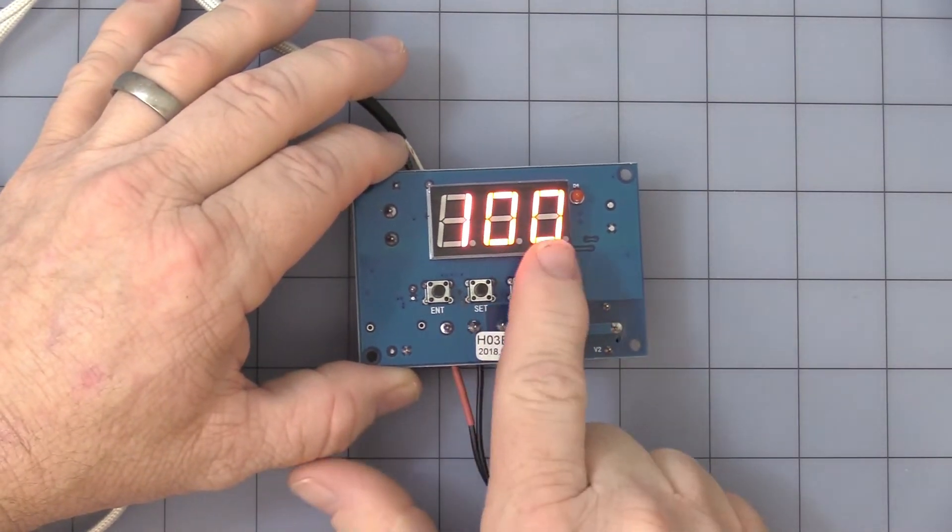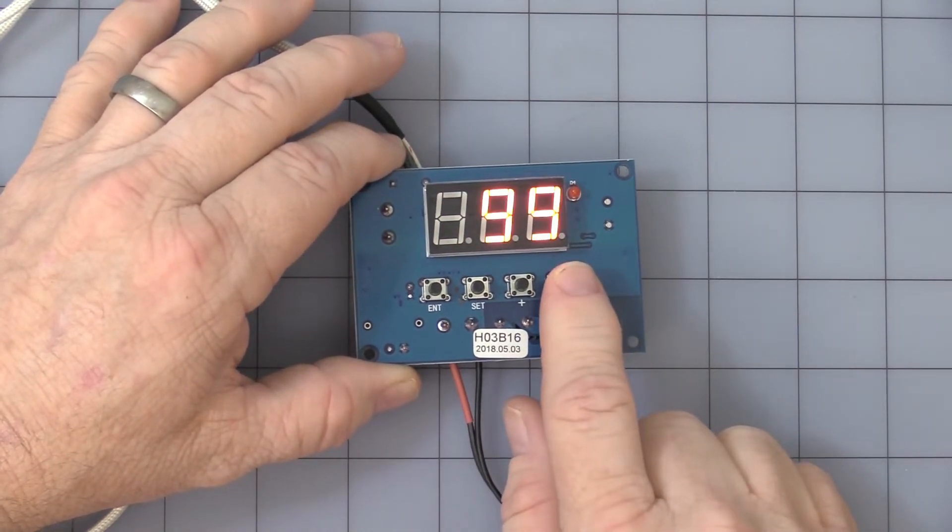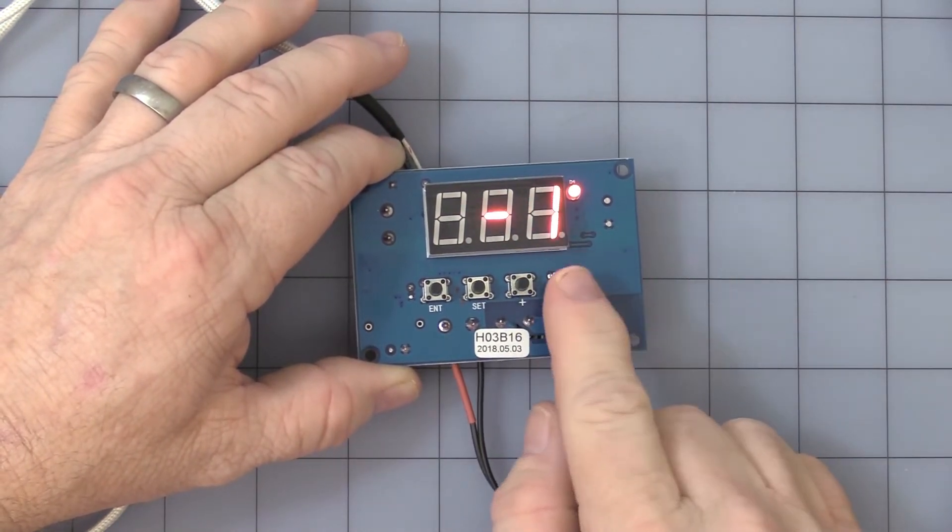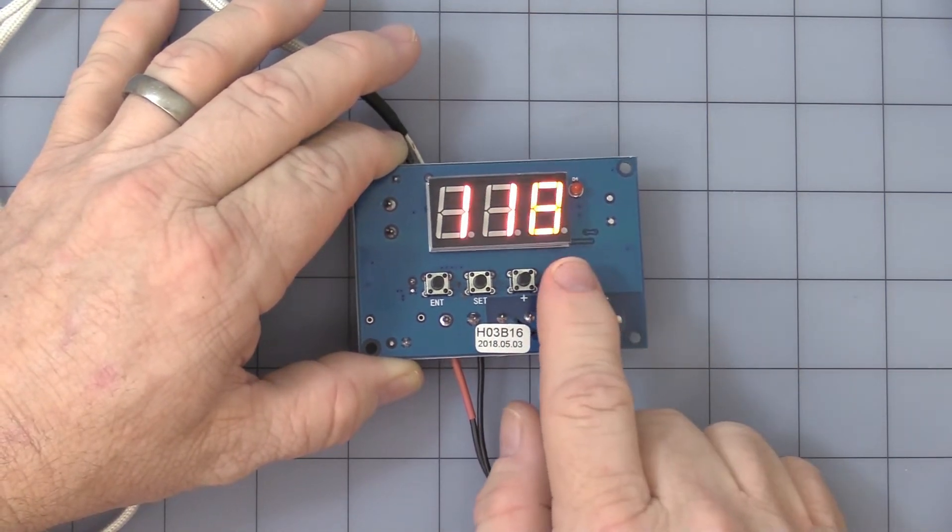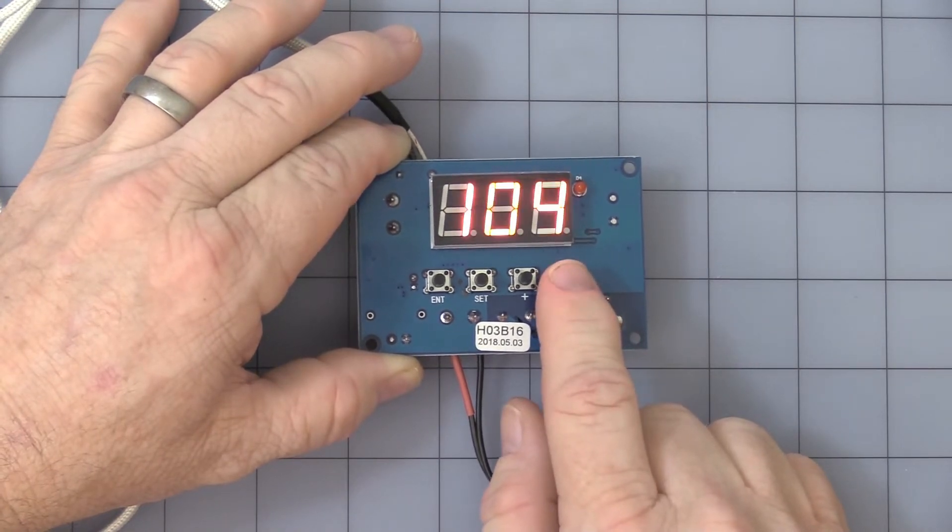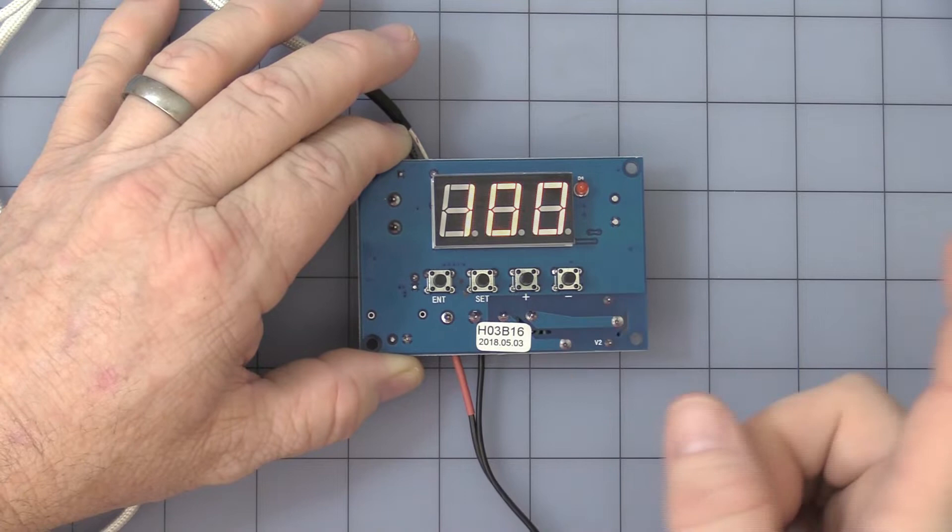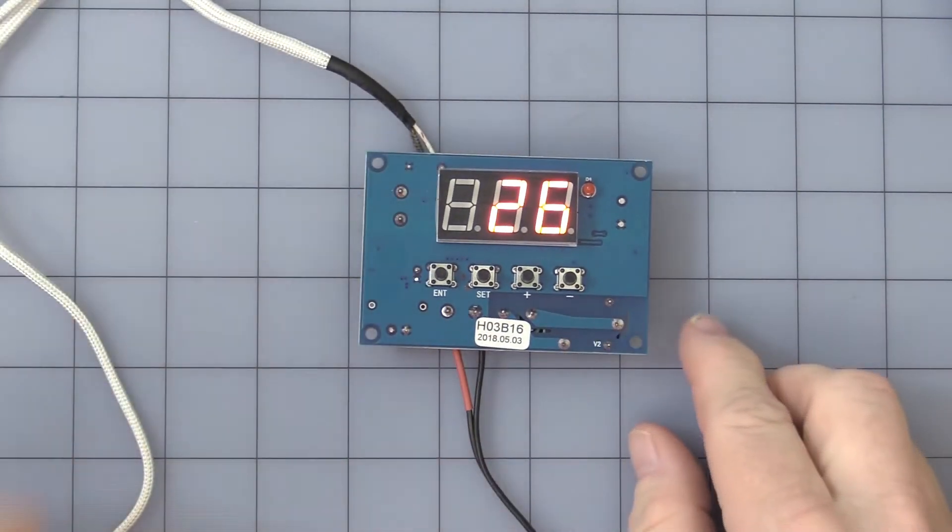And that displays the temperature set point. When it's flashing, you can just simply use the plus and minus button to set whatever temperature you like. 100 degrees C seems to work well for demonstration purposes, so we'll keep it at that. You can hit enter, and it starts displaying ambient air temperature.